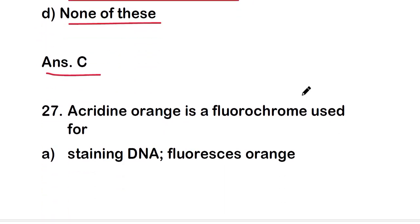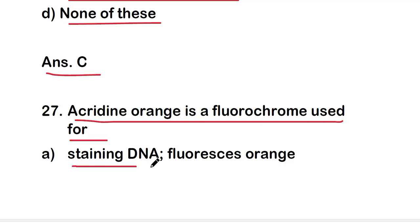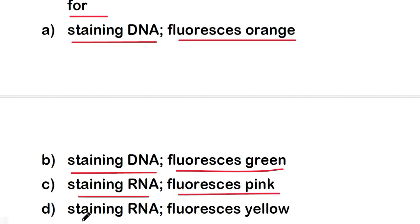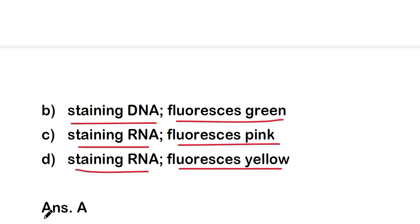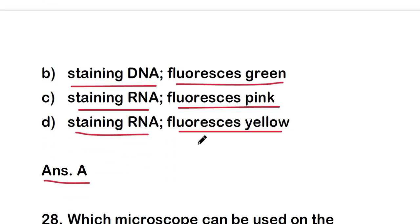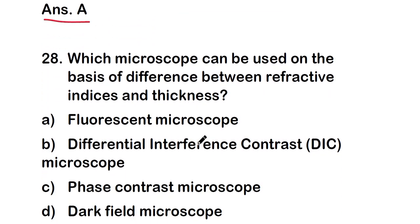Next question: acridine orange is a fluorochrome used for staining DNA and fluoresces orange, staining DNA and fluoresces green, staining RNA and fluoresces pink, or staining RNA and fluoresces yellow? The right answer is option A — acridine orange is a fluorochrome used for staining DNA, which fluoresces orange.